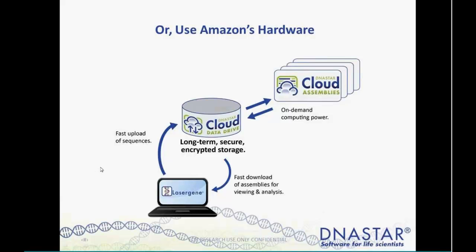One option introduced within the last year is just using Amazon's hardware. We have the ability to set up an assembly on your local computer and then use Amazon's hardware in the cloud to run the assembly and return the results. It uses a new DNASTAR cloud data drive that's secure, using the HTTPS protocol — the same thing you use for wire transferring money. It has very fast data transfer, and you can run multiple assemblies concurrently. For example, you could have 20 exomes that need to be done overnight, run them concurrently, and get the results in just a few hours. It's also a great option for demos.